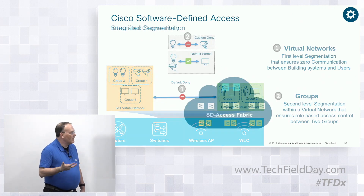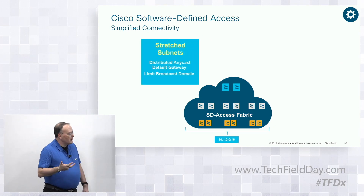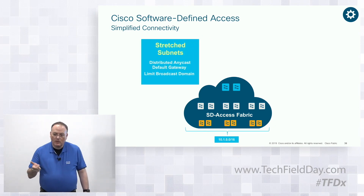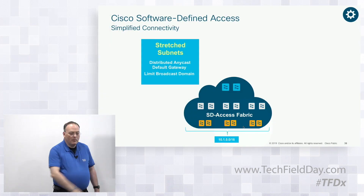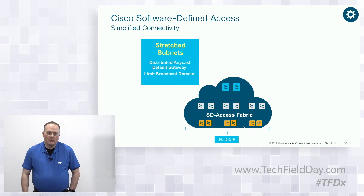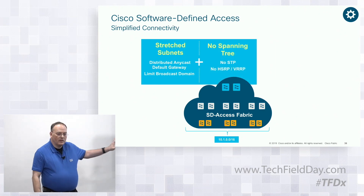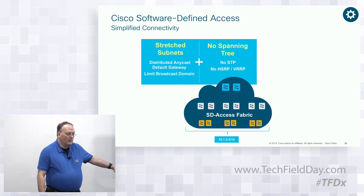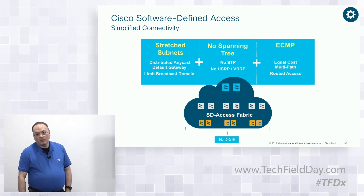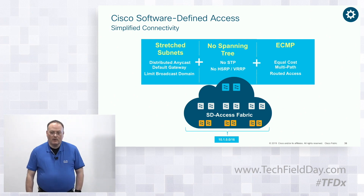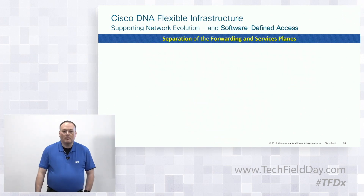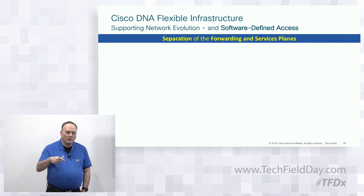This also gives us capability for stretched subnets — having the same subnet appear end-to-end. If you define a 10.100 subnet, by default it appears everywhere on all those fabric edge switches simultaneously. There's no spanning tree in the environment — we terminate spanning tree only from the edge switch downward. From the edge switch upward it's all entirely routed and all ECMP routing, so there are no blocking ports. Everything is at full efficiency — all the bandwidth you're paying for. These are all inherent properties of what the fabric provides.